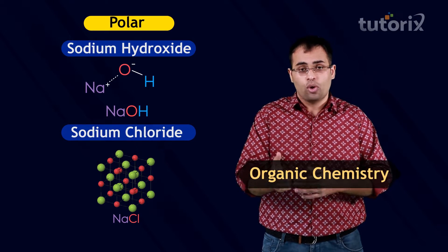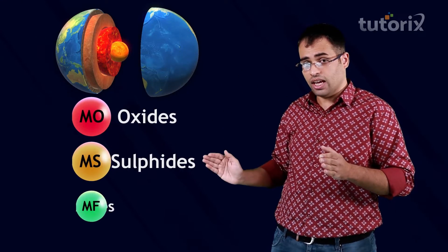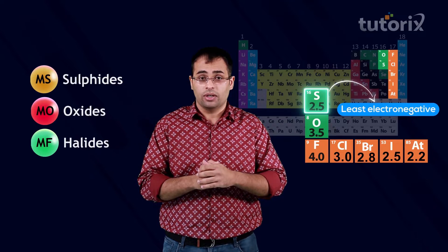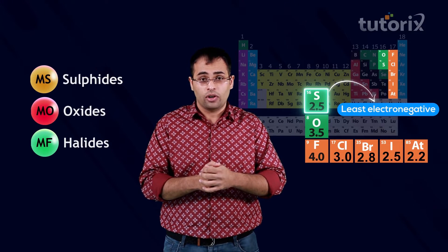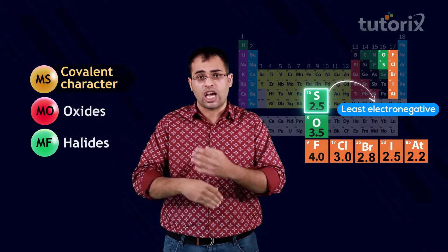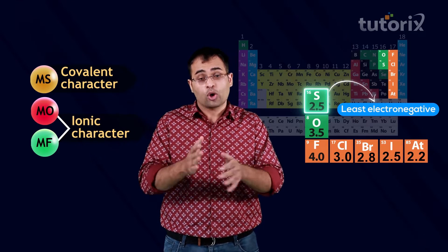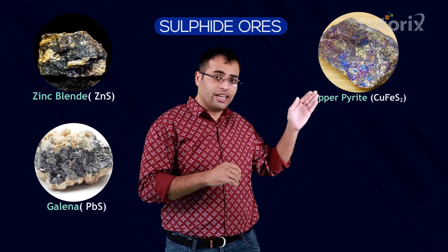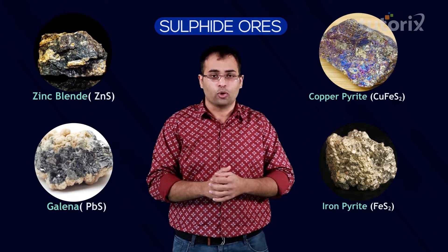Applying the same principles to ores: most metals are present in the earth's crust as oxides, sulfides, and halides. Comparing the electronegativities of sulfur, oxygen, and halogens, sulfur is the least electronegative element. Because of this, sulfide ores have a predominantly covalent character compared to oxide and halide ores, which have predominantly ionic character. Therefore, sulfide ores are nonpolar and hence hydrophobic. Sulfide ores like zinc blende, galena, copper pyrite, and iron pyrite are concentrated by the froth flotation process.